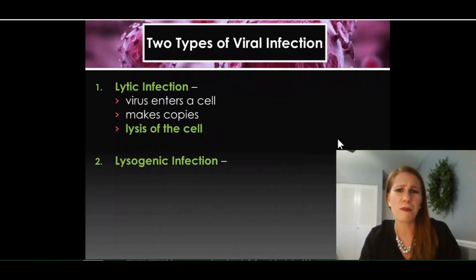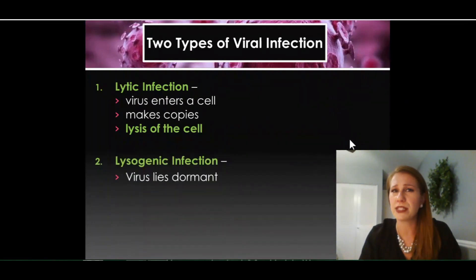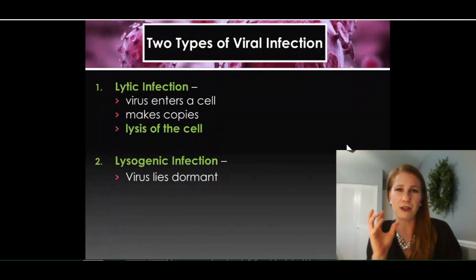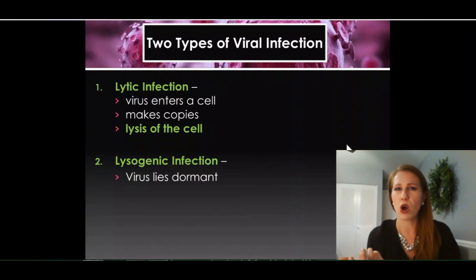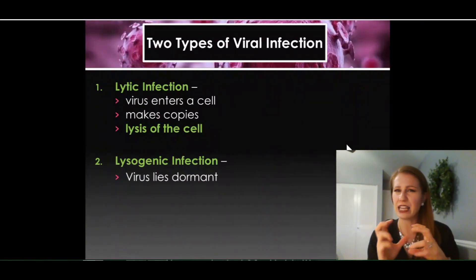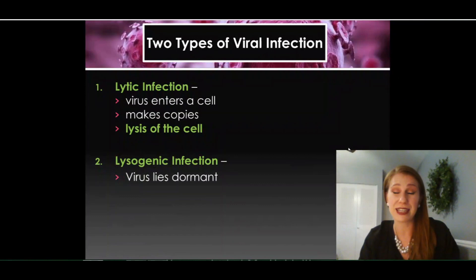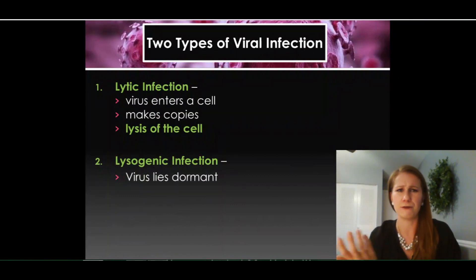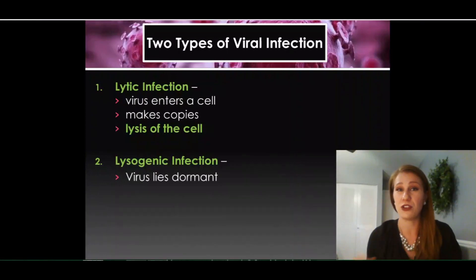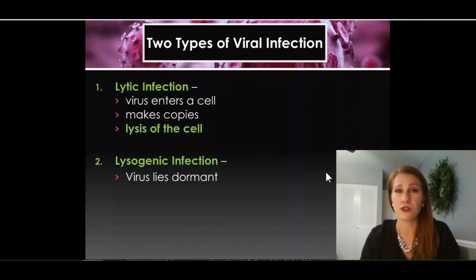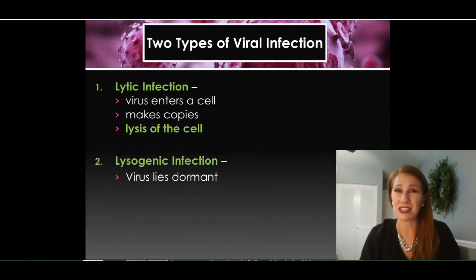The second type of viral infection is lysogenic. In this one, the virus enters the cell, but that virus DNA actually becomes part of your host cell's DNA. It gets hidden so well that the virus can stay dormant — think of 'dormir,' like asleep in Spanish. It stays asleep and hidden in your cells, sometimes for months, sometimes years. A lot of lysogenic infections lie dormant for many years and people will not know that they have them until it's honestly too late.